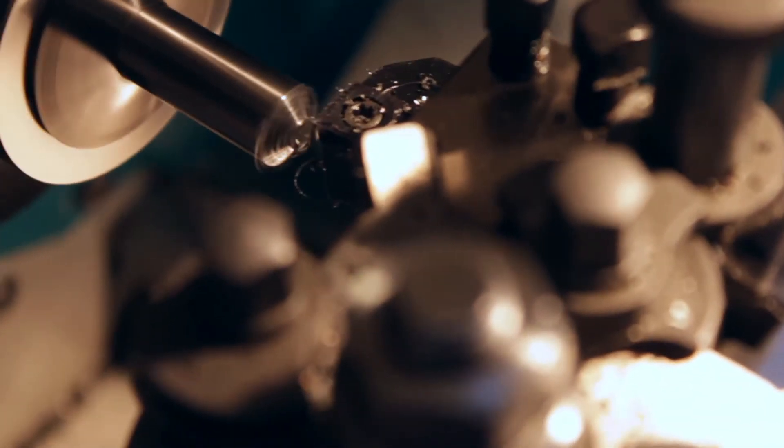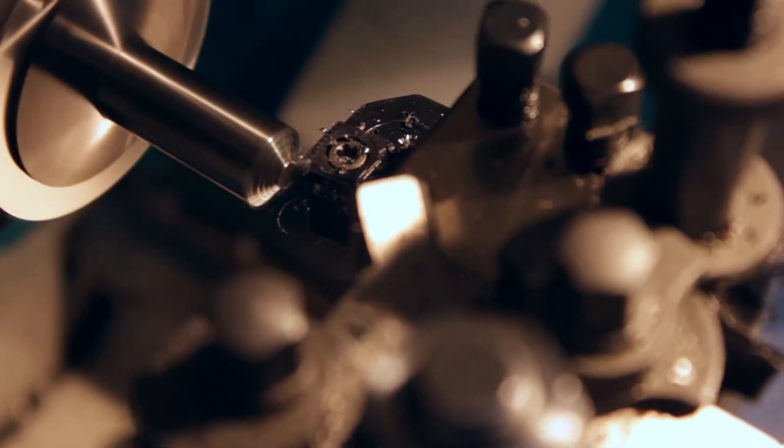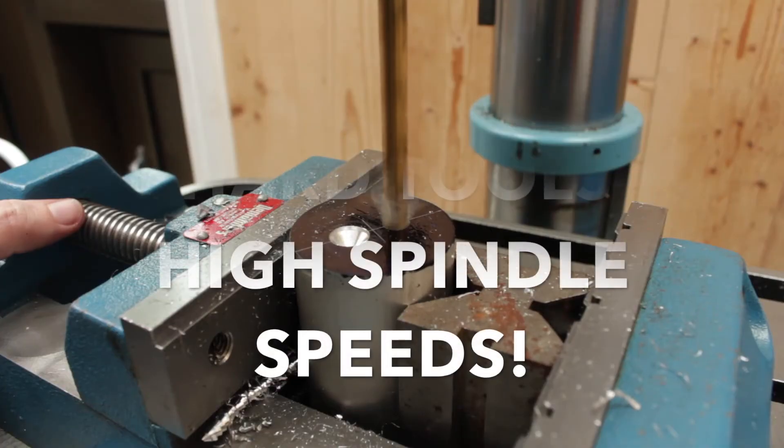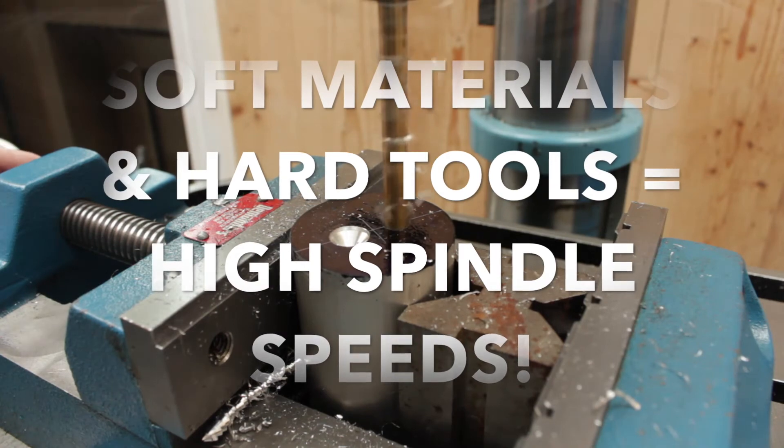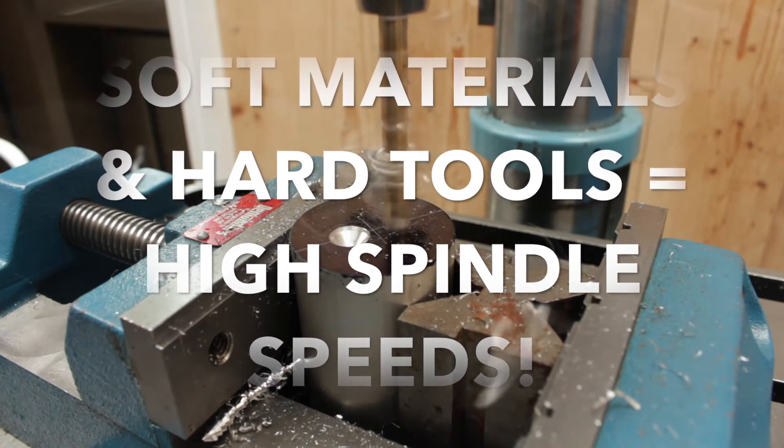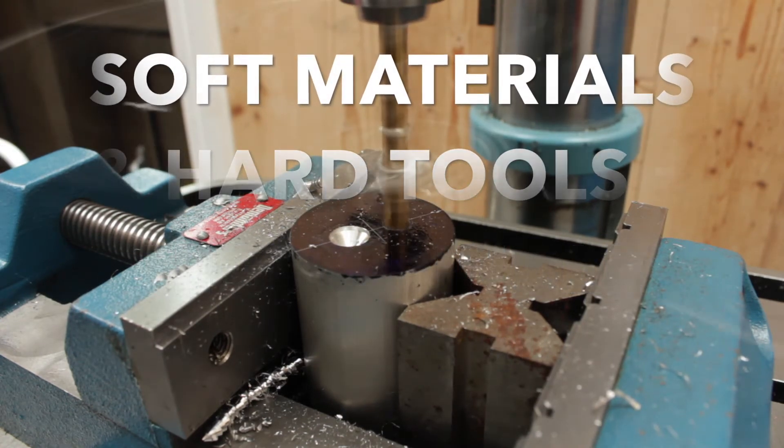The opposite is true for cutting tools. So the harder the cutting tool, the faster you run it. So carbides are run much faster than a high speed steel. So remember hard cutting tools and soft materials both require high speeds.